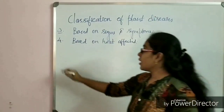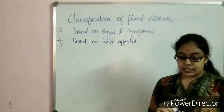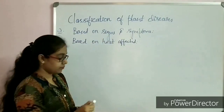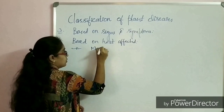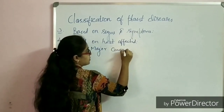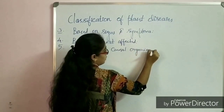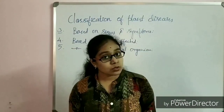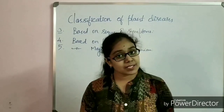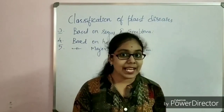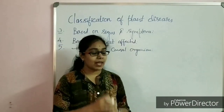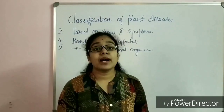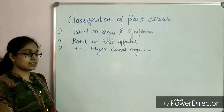Now let us move on to the fifth category. Here we classify plant diseases based upon the major causal organism. The pathogen may be bacteria, virus, or mycoplasmas. Based on this, we classify plant diseases into fungal disease, bacterial disease, viral disease, and mycoplasma disease.